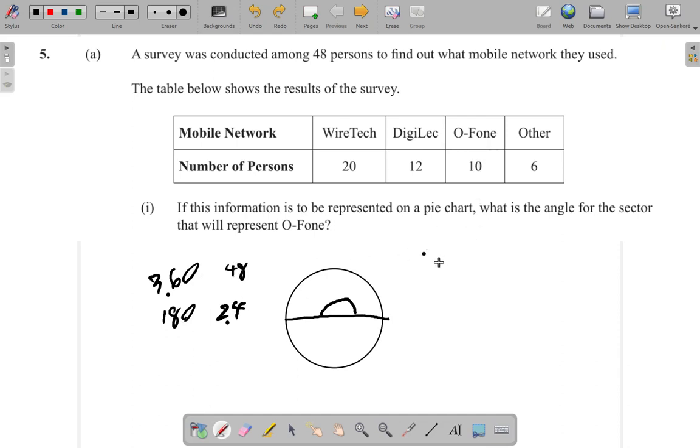So, how many out of 48 is this? O-phone is 10 out of 48. 10 out of 48, what fraction is that of the 360? Remember, if it was 24 out of 48, it would be half. 24 out of 48 is half. Times 360 would give you the 180. In the same way, 10 out of 48, times 360 would give you the answer for this.